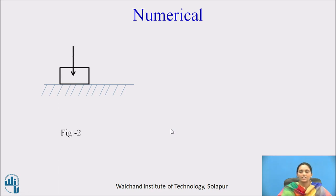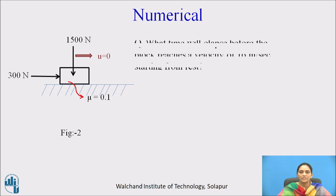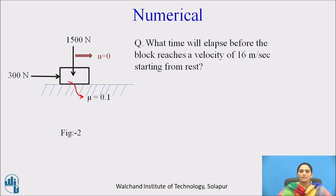We will now solve a numerical problem. There is a body of weight 1500 N on a surface having a coefficient of friction of 0.1. A force of 300 N is acting on the block, and as a result, it moves in the direction of the force, starting with an initial velocity of 0. The question is: what time will elapse before the block reaches a velocity of 16 m/s starting from rest?